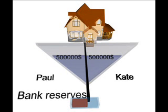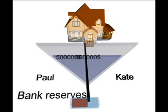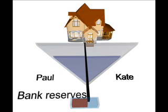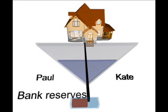Now let's say Paul and Kate fall in love and get married. Kate pays off Paul's loan with her $500,000, and the money — or more accurately, credit — will cease to exist. Both the bank's liabilities and assets will then shrink simultaneously on both sides of the bank's balance sheet.